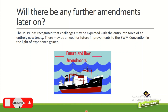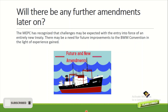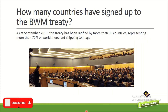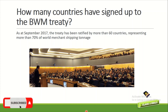This presentation covers the basic BWM Convention requirements, the D1 and D2 standards, ballast water exchange procedures, IOPPC renewal surveys, and PSC obligations — all aimed at keeping the seas clean. How many countries have signed up to the BWM treaty? As of September 2017, the treaty had been ratified by more than 60 countries representing more than 70% of the world's merchant shipping tonnage.